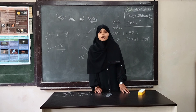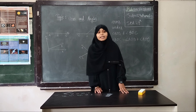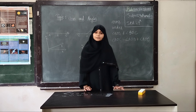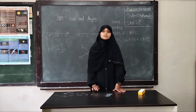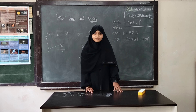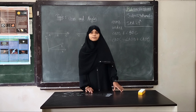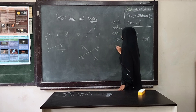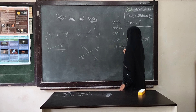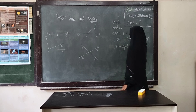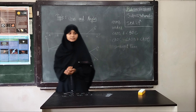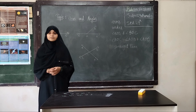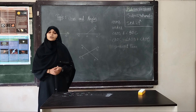What do you mean by a linear pair? Linear pair of angles have a common vertex, common side, and the non-common sides make a straight line. What do you mean by a straight line? A straight line is a line segment in which we get the angle as 180 degrees. Very good.